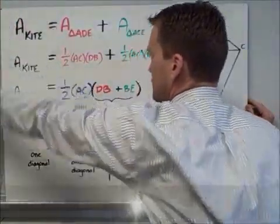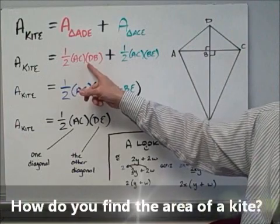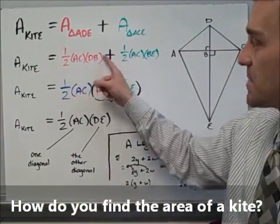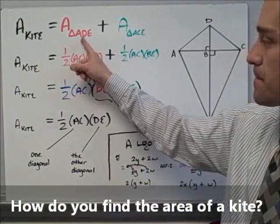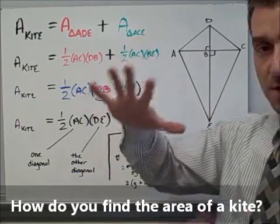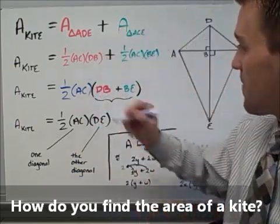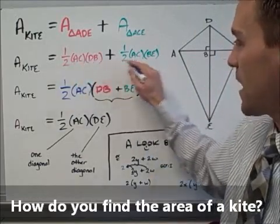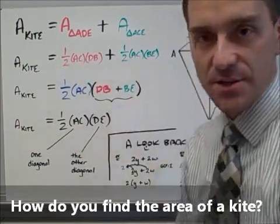It creates this formula right here, where I plugged in the one-half AC DB in for that triangle, and one-half AC BE in for that triangle. Now here's the deal, we're getting to the point. If I take these two things that add them together, now wait a minute, algebrainiacs get ready for this.